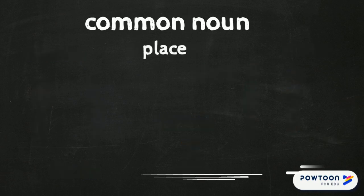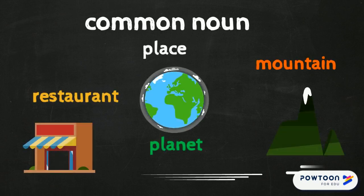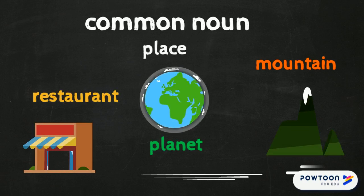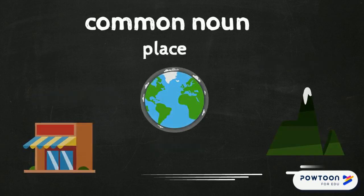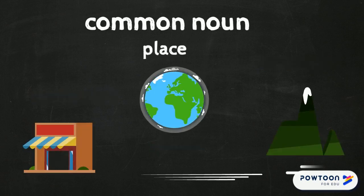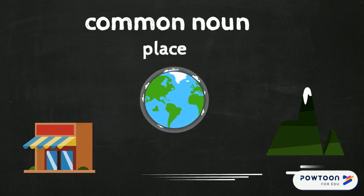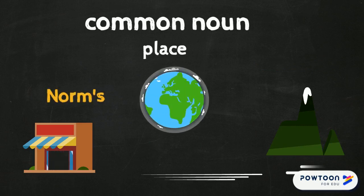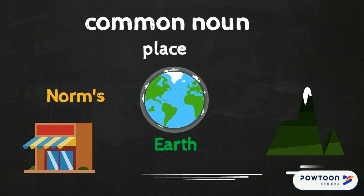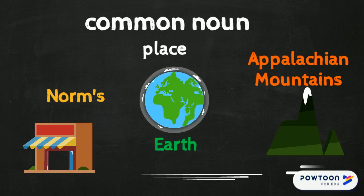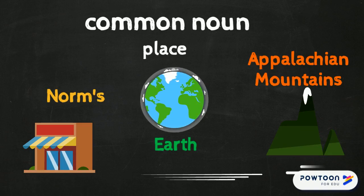Let's do a couple more examples. Here are some places: a restaurant, a planet, and a mountain range. These are all lowercase since they are generic, common names. Here are the same places but now as more specific, proper nouns: Norms, Earth, and the Appalachian Mountains. All of them are now capitalized because they are specific, proper names.